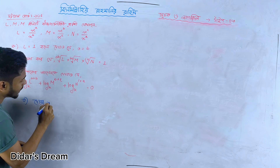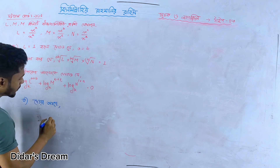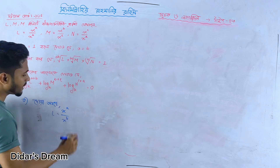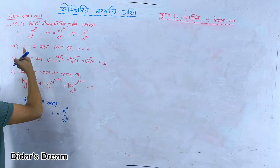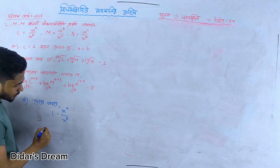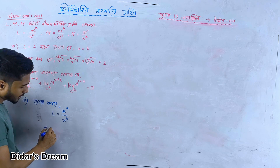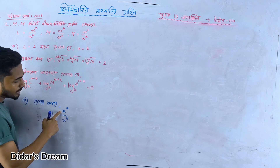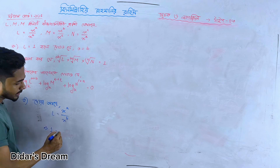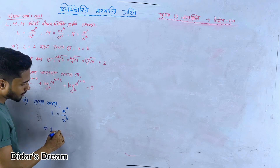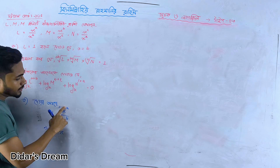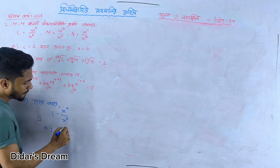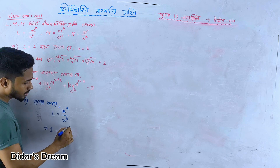We have 2 equals x to the power b. Now we have 1 equals x to the power b. Now, how do we get the base? The base is the power of 2x. So the base is 2x. Now the base is the power of 2.